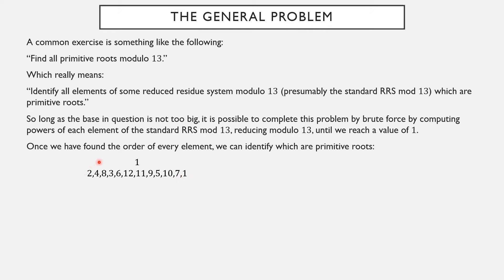2 to the 1st, 2nd, 3rd, 4th, 5th, 6th, 7th, 8th, 9th, 10th, 11th, 12th — so the order modulo 13 of 2 is in fact 12. So 2 is a primitive root. Not 1, however.